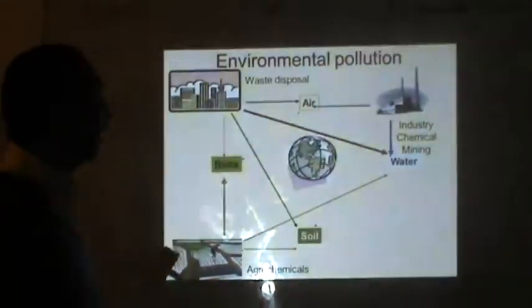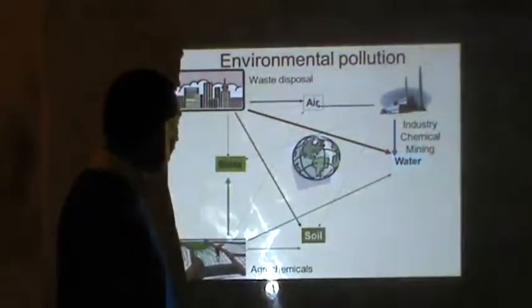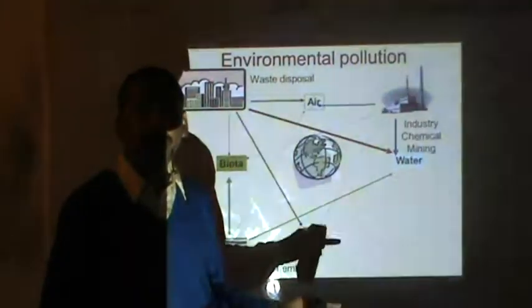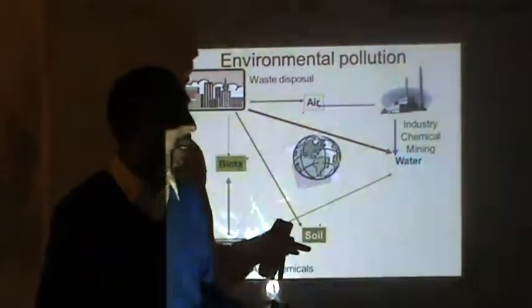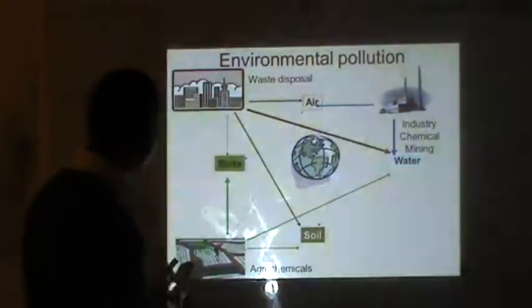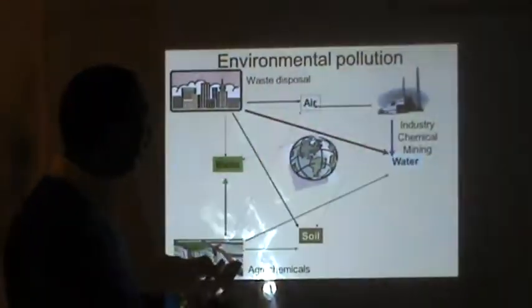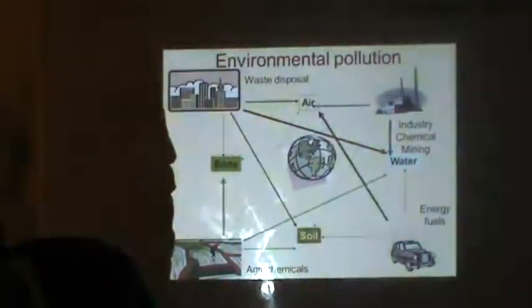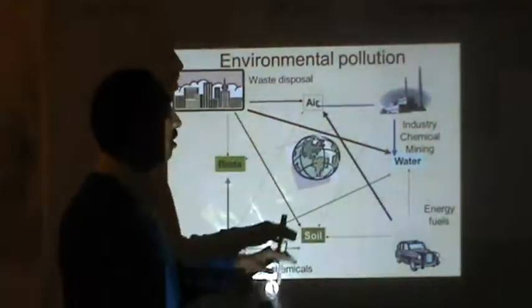Coming to agrochemicals — the waste which is generated enters the water. The chemicals used, like fertilizers and pesticides, through aerial spray, enter the main water supply or enter the air. So you see how the earth is being damaged from several sources.